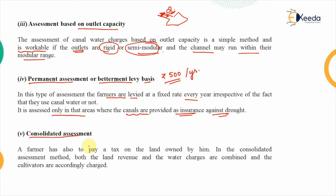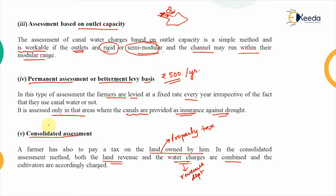The fifth method is consolidated assessment. A farmer pays a property tax — land revenue — on the land owned by him. In consolidated assessment, this land revenue and the water charge are combined by the revenue department of the state government's ministry. Both charges are clubbed together and the cultivators are charged accordingly. This completes all the types of assessment of irrigation water. In the next video we will look at different methods of water harvesting.